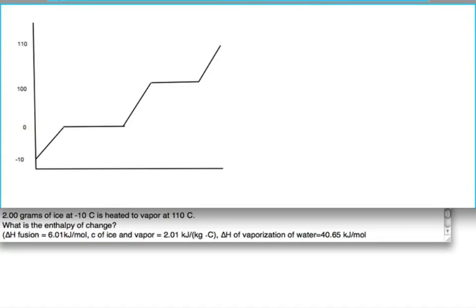What most students have problems with is which formula to use. So what I would suggest is label these sections on the graph where there's a temperature change as A, B, and C. Since there is a change in temperature, we would use the equation q equals m c delta t.